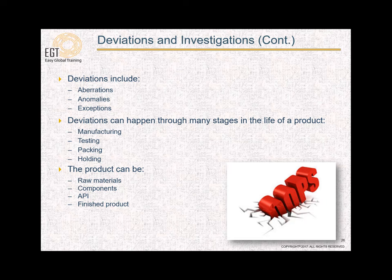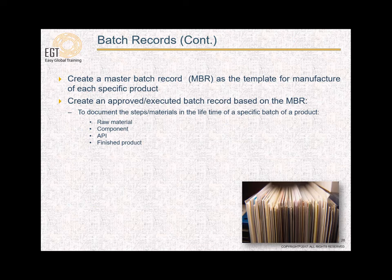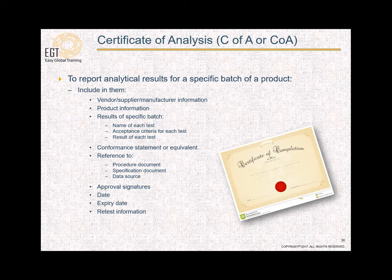The next subject discussed in U.S.P. Chapter 1029 is deviations and investigations. The next subject is batch records — you need to create a master batch record, or MBR, as a template for the manufacture of each specific product. This is followed by a discussion of the certificate of analysis, also known as C of A or COA.